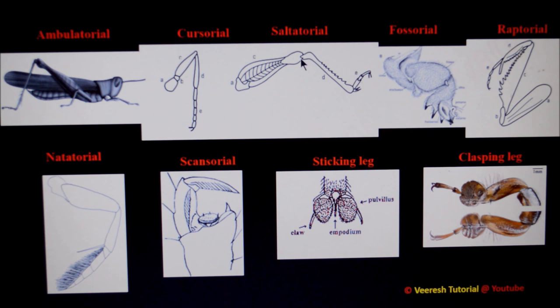The third type is saltatorial legs, suited for jumping purpose. This type of leg can be seen in the hind legs of grasshoppers. In saltatorial legs, the femur is more swollen, and the tibia is enlarged to accommodate more muscles, which are useful for jumping.